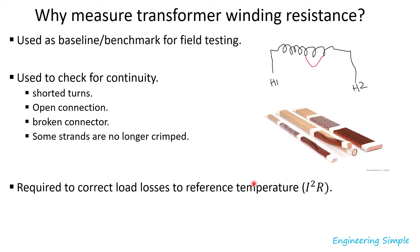Winding resistance is also required to correct load losses to a reference temperature, because resistance impacts the I²R portion of the losses. Load losses consist of I²R plus stray losses caused by stray fluxes. If you measure resistance at temperature A but want to know the losses at temperature B, you need the resistance value to make that conversion.